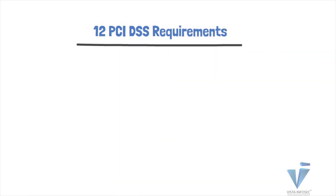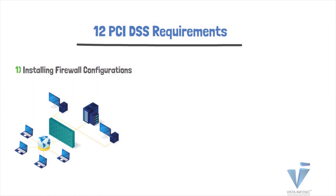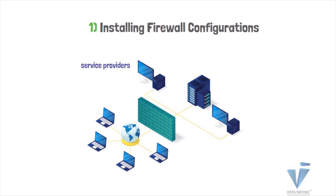Let us take a closer look at these 12 requirements outlined by the PCI Council. PCI DSS Requirement 1 is to install and maintain a firewall configuration to protect cardholder data. This requirement ensures that service providers and merchants maintain a secure network through proper configuration of firewalls. These firewalls are security measures that provide a first line of protection to your network. Appropriate configuration of these firewalls will protect your card data environment.